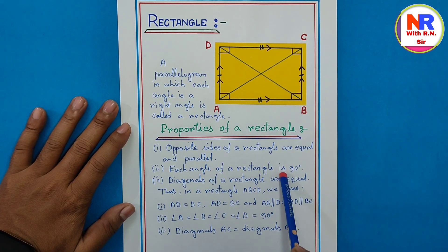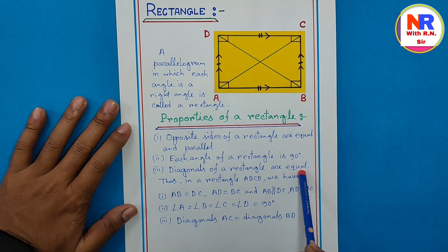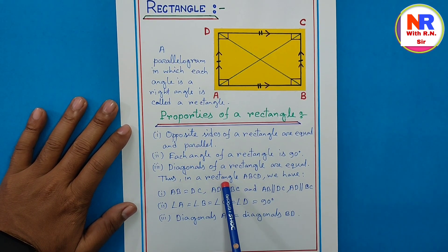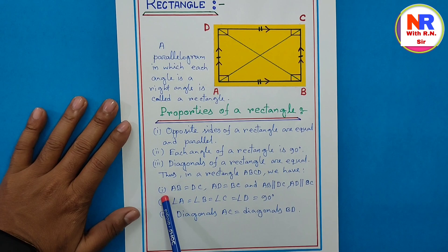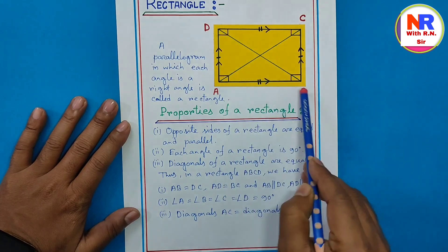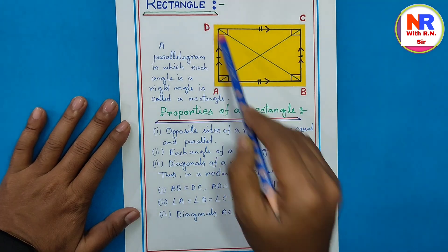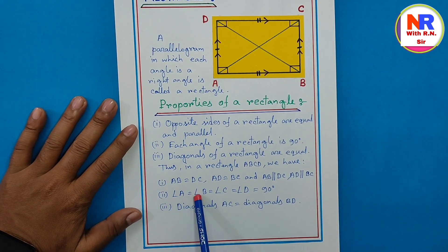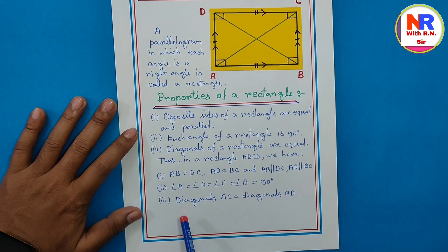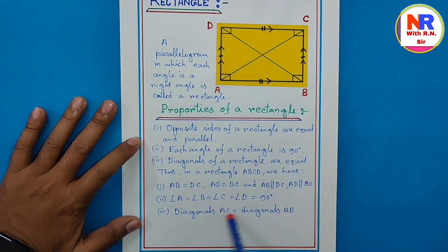Each angle in a rectangle is 90 degrees, meaning angles A, B, C, D are all 90 degree angles. Diagonals of a rectangle are equal — diagonal AC and diagonal BD are both the same length. Thus in rectangle ABCD: AB = CD, AD = BC, AB ∥ CD, and AD ∥ BC. Point 2: angle A, B, C, D are all 90 degrees. Point 3: diagonals AC and BD are equal in length.